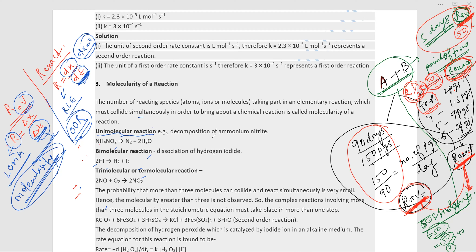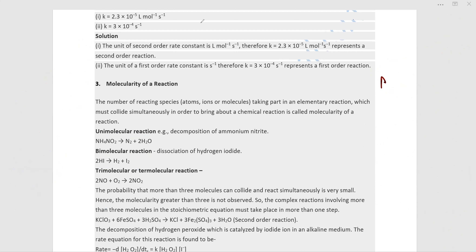If a reaction has molecularity one, it is called a unimolecular reaction. All decomposition and dissociation reactions are first order reactions. For example, decomposition of ammonium nitrite (NH4NO2) into N2 and H2O is a unimolecular reaction with molecularity one.